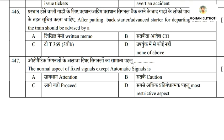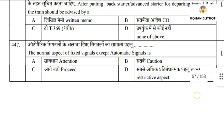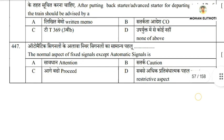Coming to question 447: after putting back a starter or advance starter for the departing train, the locopilot of the train should be advised by written memo. Starter signal, advance starter signal, and dispatch signals — when these signals are put back, the locopilot is advised by written memo stating which signal and the reason it is put back. The answer is option A: written memo.